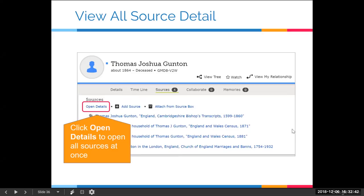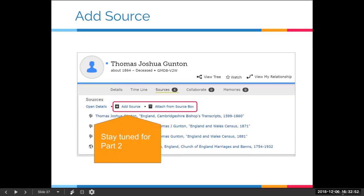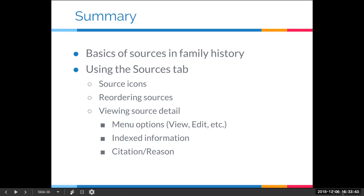The next two buttons — which we aren't going to talk about today — have to do with adding sources. Stay tuned for part two, and we will be covering that a week from today. That concludes our webinar today. We covered the basics of sources and family history, reviewed key features of the sources tab, talked about the three different icons, how to reorder sources by dragging, viewing source detail, the different menu options, the indexed information, and the bottom section with the citation and reason statement. Thank you everybody so much for joining us.